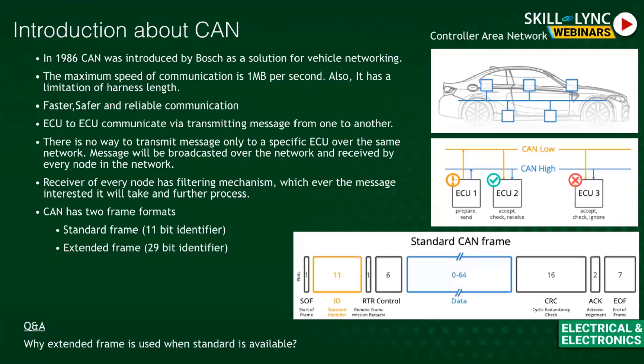How does the transmitter know it transmitted correctly to the ECU? There should be an acknowledgement — either a positive acknowledgement meaning it was received properly, or a negative acknowledgement meaning it was not received. The receiver sends this acknowledgement, and at the end of frame, stuff bits are added into the message frame.